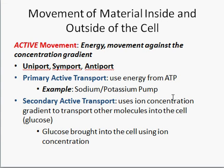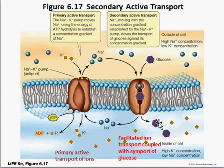When it comes to active transport, there are two main types. Primary active transport uses energy from ATP directly — this is the sodium-potassium pump. Then there's secondary active transport, which uses some other sort of gradient to transport molecules into the cell.